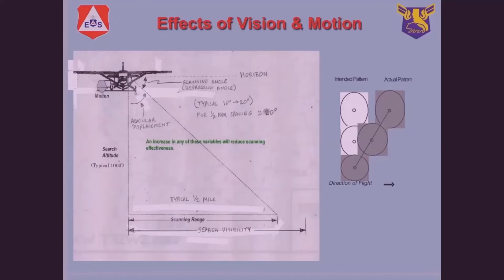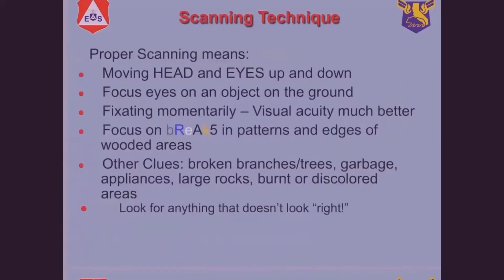Your scanning range must always be, by definition, less than your search range. On a day where it's really foggy and smoky, maybe you can only see to where my cursor is. In that case you would bring your scanning range in to that same distance, because you'd be wasting your time looking through a bunch of smoke. Instead, concentrate on this part here.